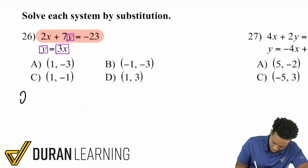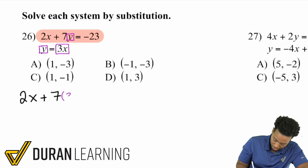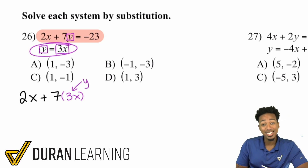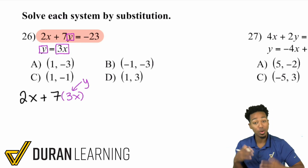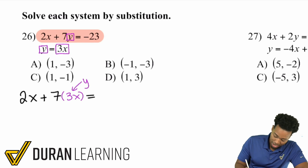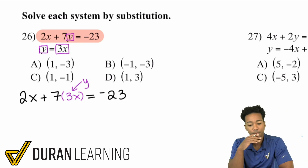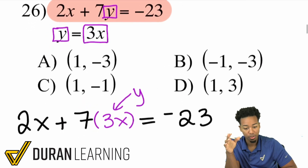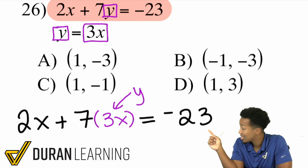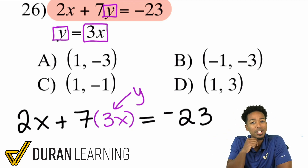So let me write it down. We have 2X plus 7 times Y, which is the same as 3X — because Y is 3X, we substitute that in. That's why it's called substitution: you're replacing the variable with what it equals. So the equation becomes 2X plus 7 times 3X equals negative 23. Now we have one equation with one variable, X, and we can solve it.